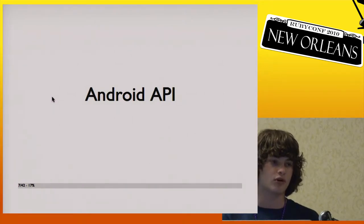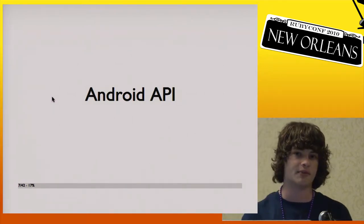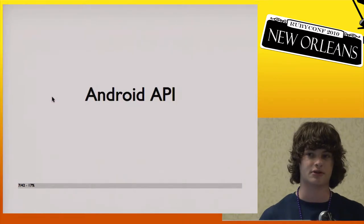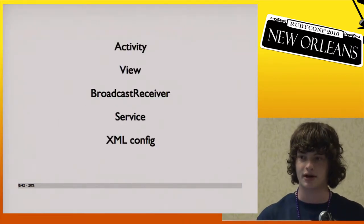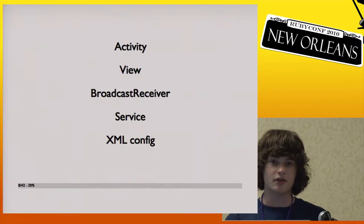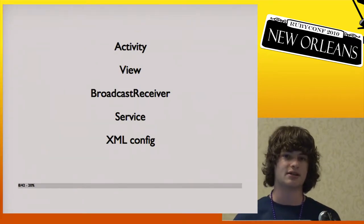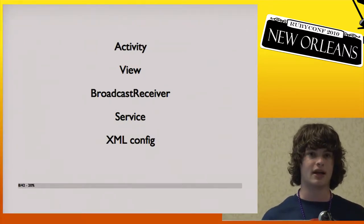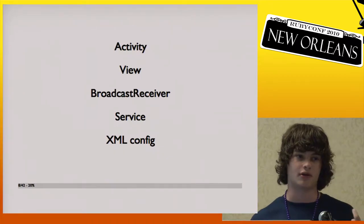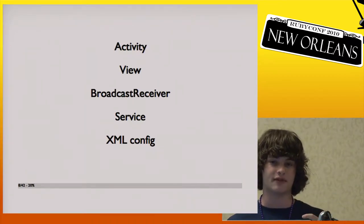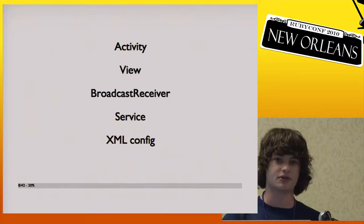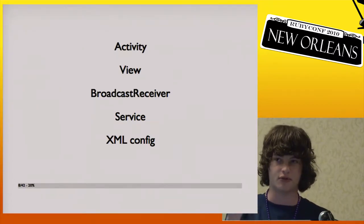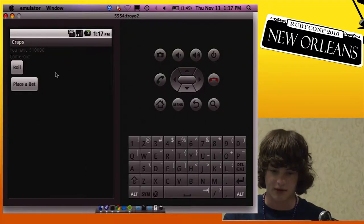I'm going to give you a whirlwind overview of the Android API, assuming you don't really know much about it. The two main visual elements are activities and views. An activity is generally going to be one screen full of things — it's analogous to a web page in web development. You'll have one activity with a bunch of view elements within it, and when you shift to a new screen, that's a new activity. I'll illustrate that with a demo.